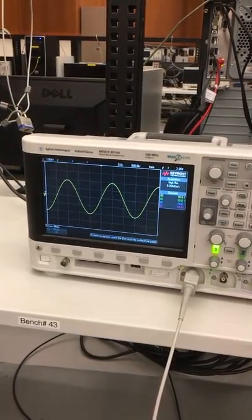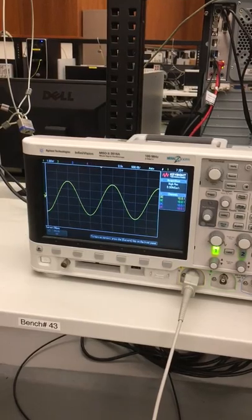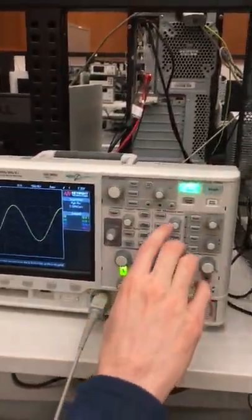So here we have a 4 volt sine wave and in order to actually check if the amplitude is 4 volts there's this cursor button.